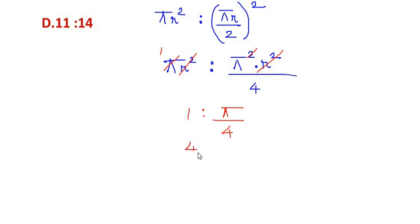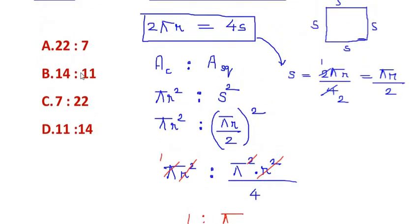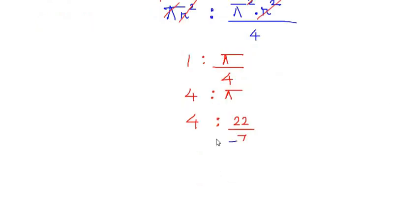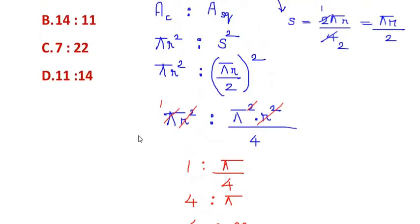4 multiplies with 1 giving 4 : π. But in the options we do not have π; we need to change π to its rational form, 22/7. So 4 : 22/7. Sending the 7 to the other side, 4 times 7 gives 28 : 22. We can further simplify by dividing both by 2, giving 14 : 11, which is option B.